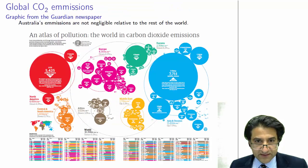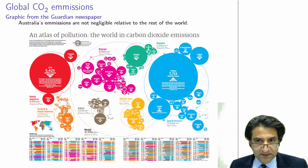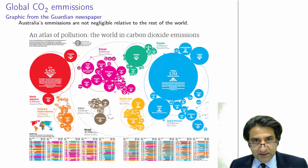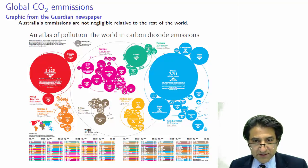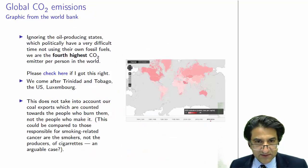If we go back to the previous graph and look at energy production and trends, you can see that Europe is decreasing quite a lot in its CO2 emissions — they have a CO2 emissions trading scheme. They're doing very well on that front. Their governments, generally speaking Germany, are imposing schemes on the EU which are leading to a good reduction of CO2, perhaps at the expense of the rights of some nations.